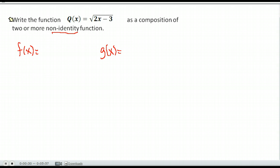When it says non-identity, that means you can't just say f of x is x and g of x is the square root of 2x minus 3. f of x equals plain x can't be one of your functions you're using.